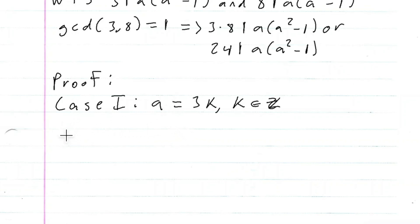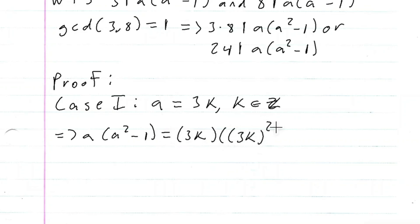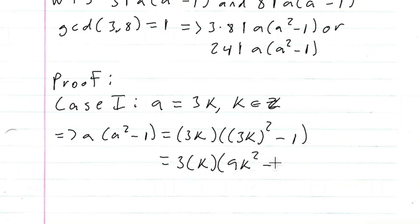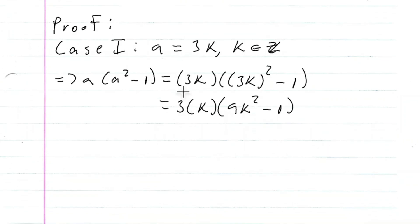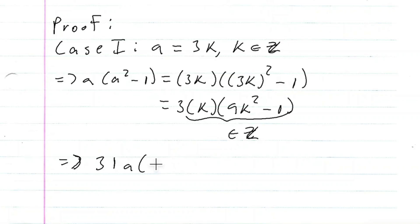So this implies that A times A squared minus 1 is equal to 3K times (3K)² minus 1, which equals 3 times K times (9K² minus 1). We already have A times A squared minus 1 expressed as 3 times an integer, so this means 3 divides A times A squared minus 1 when A is of the form 3 times an integer.